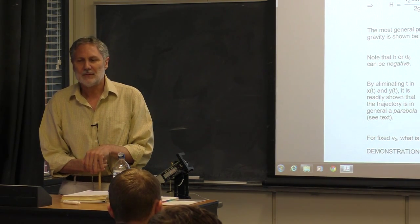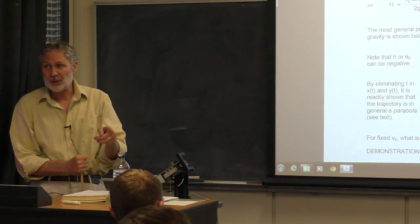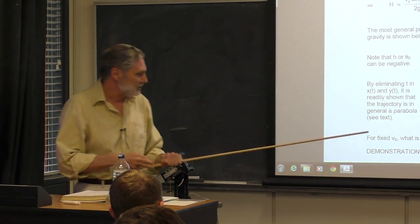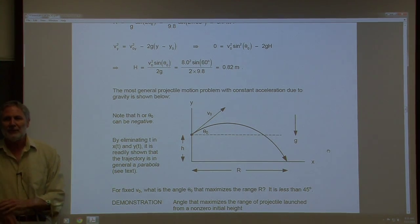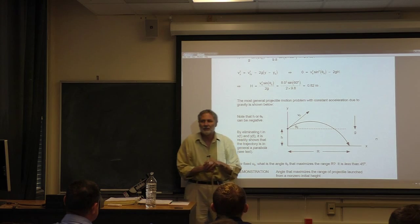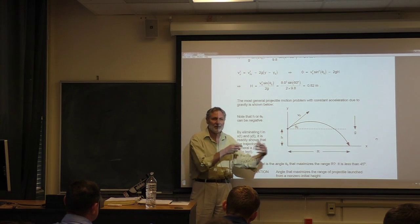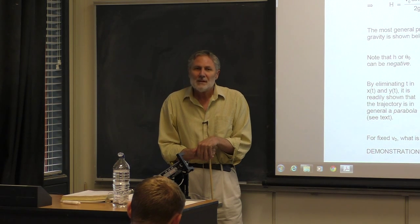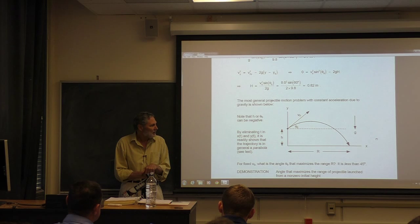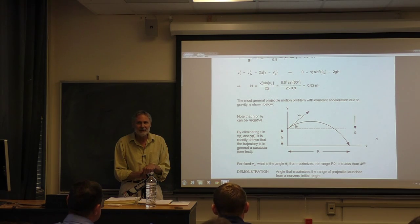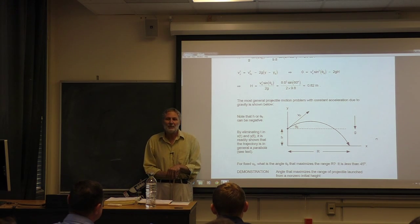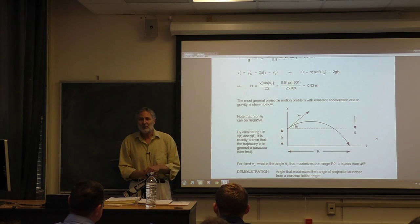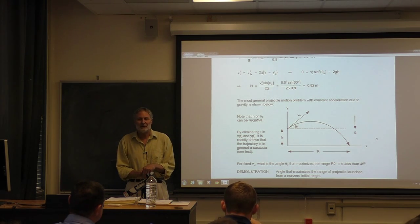How would you analytically determine the angle that maximizes the range when h > 0? You'd first need a formula for the range in the general case. Then you take the derivative of that expression with respect to theta₀ and set it equal to zero — differential calculus. That gives you a formula, which I've seen and worked through, but we won't do it here since it requires the quadratic formula and gets a bit messy.